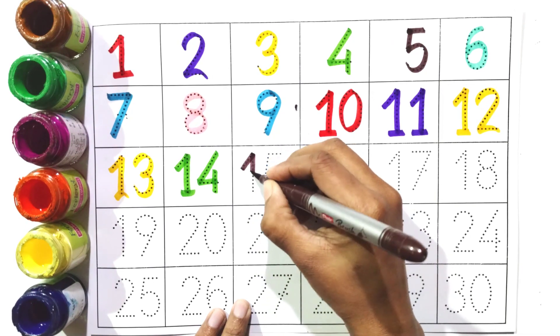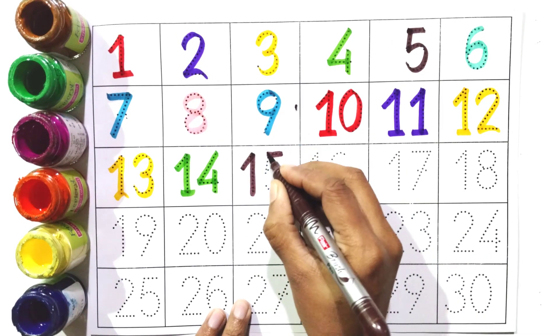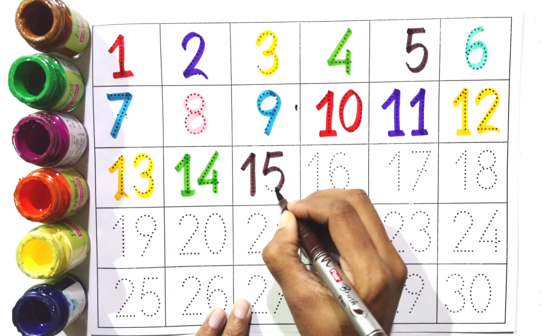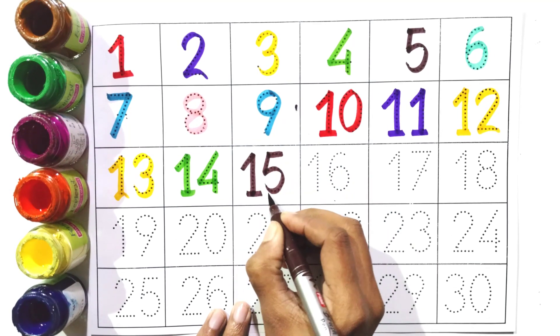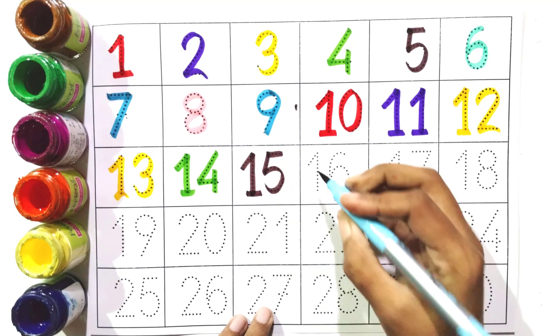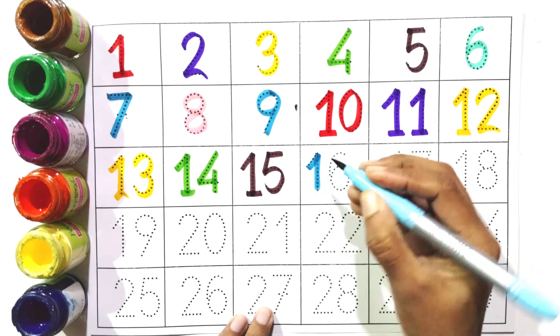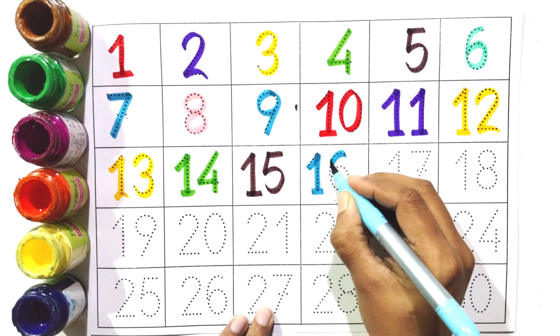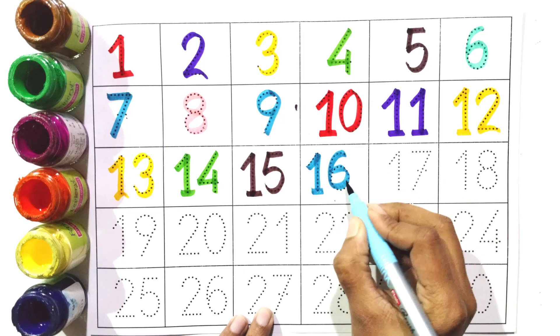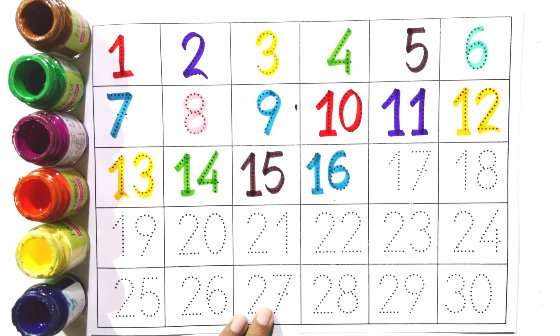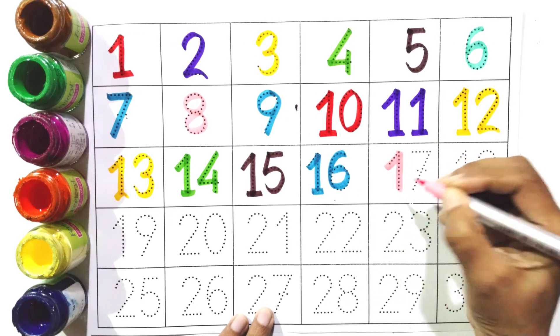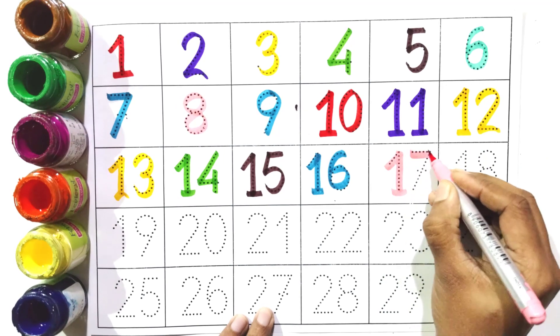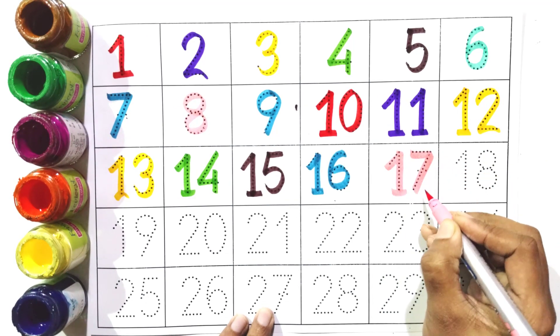One and five, fifteen. One and six, sixteen. One and seven, seventeen.